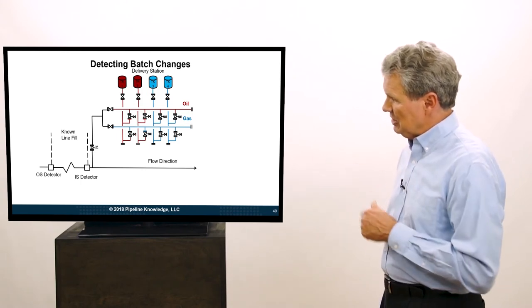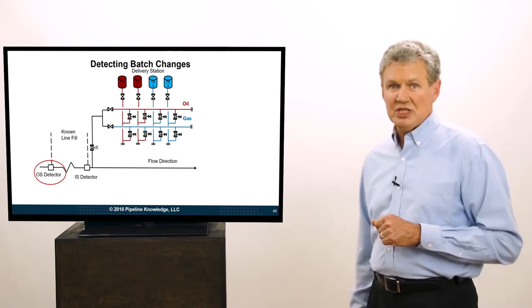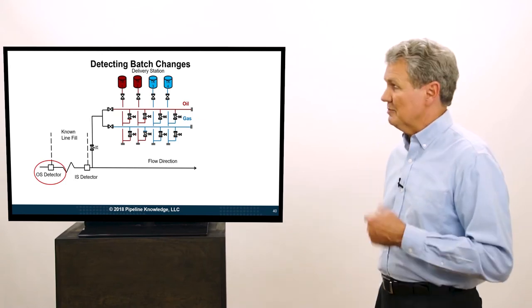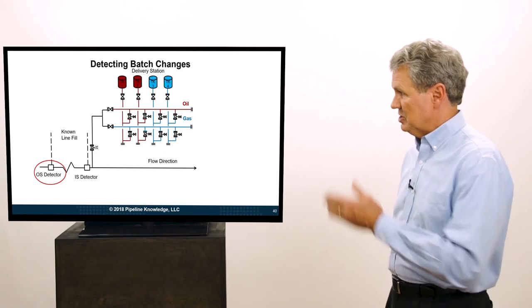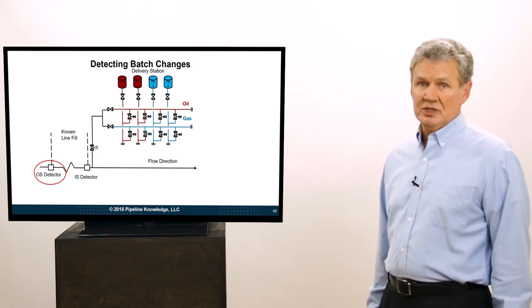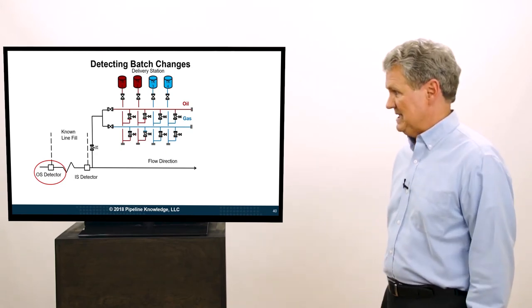You can see we're coming in. If we look on the left, we have an outstation detector. Perhaps a gravitometer, perhaps a color meter, perhaps both. And so it tells us when the line field goes past there. Or I should say, when the interface goes past there.